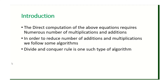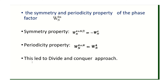Before we move to the algorithm, let's recall the symmetric and periodic properties, which are fundamental to the divide and conquer approach. If you want a clear idea about these properties, please go through the links mentioned in the description. The symmetric property is given by omega_N power (k + N/2) equal to minus omega_N power k, and the periodic property is given by omega_N power (k + N) equal to omega_N power k.